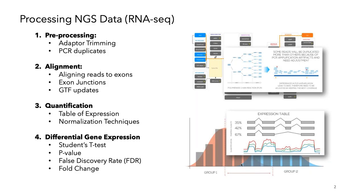The goal of today's session is to review the steps of processing RNA-seq data. Last time we talked about preprocessing — adapter trimming and PCR duplicates — and we talked about alignments, different methods of alignment, specifically Bowtie2T alignment to transcriptome. We talked about quantification, how to get the table of expression. Today we'll talk about normalization and then switch over to differential gene expression, covering the student's t-test, p-value, false discovery rate, fold change, and methods like EdgeR and DESeq2.